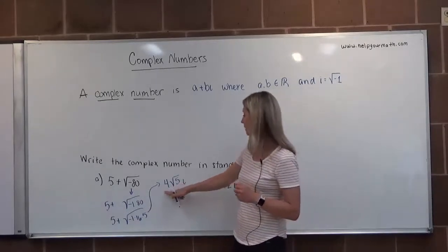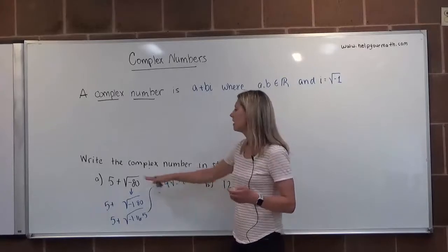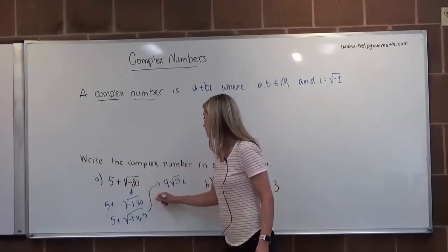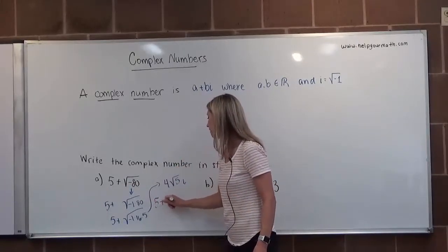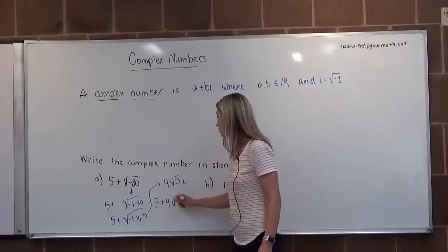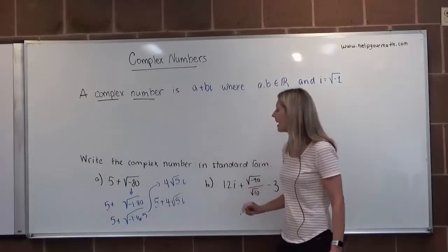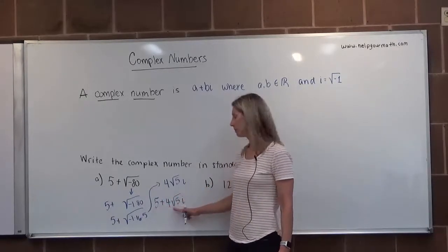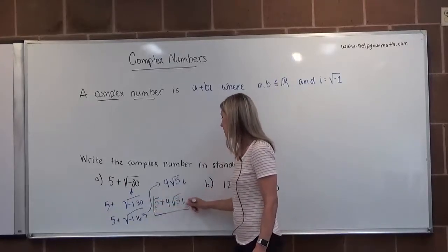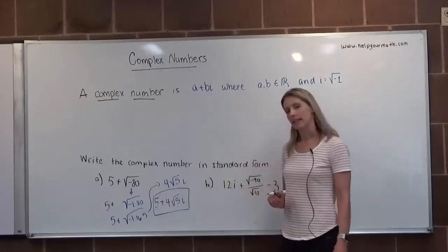Oh, I forgot a part. I only have four times the square root of five i, but there's also this five plus. So I need to bring that down. So it's five plus four times the square root of five i. I can't add these together because this is a real number and this is an imaginary number.